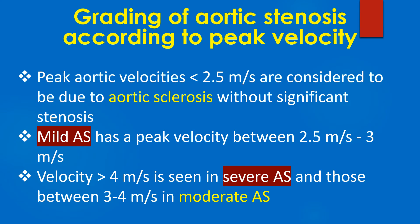Rating of aortic stenosis according to peak velocity is as follows: peak aortic velocities less than 2.5 m/s are considered aortic sclerosis without significant stenosis. Mild AS has a peak velocity between 2.5 to 3 m/s, moderate AS between 3 to 4 m/s, and severe aortic stenosis above 4 m/s.